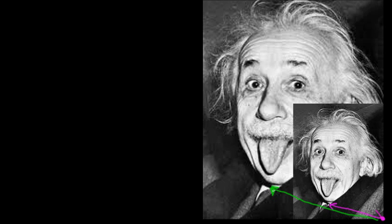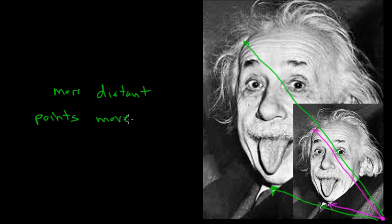Now, if I look at a more distant point, let's say this tuft of hair near the top of his head, then I notice that this more distant point will appear to have moved much farther away from me. So this nearby point moved a certain distance away from me, from here to here. But this more distant point moved even farther away. So we get this idea that more distant points move faster.